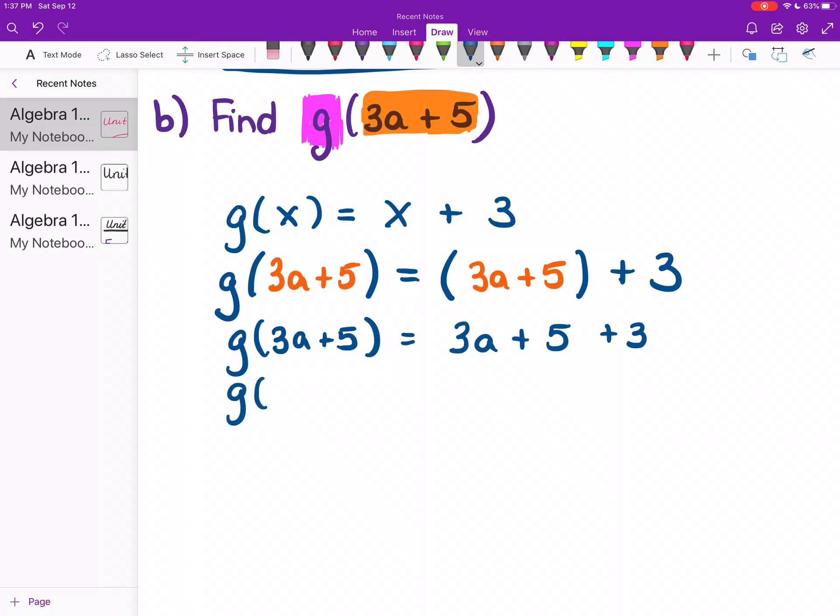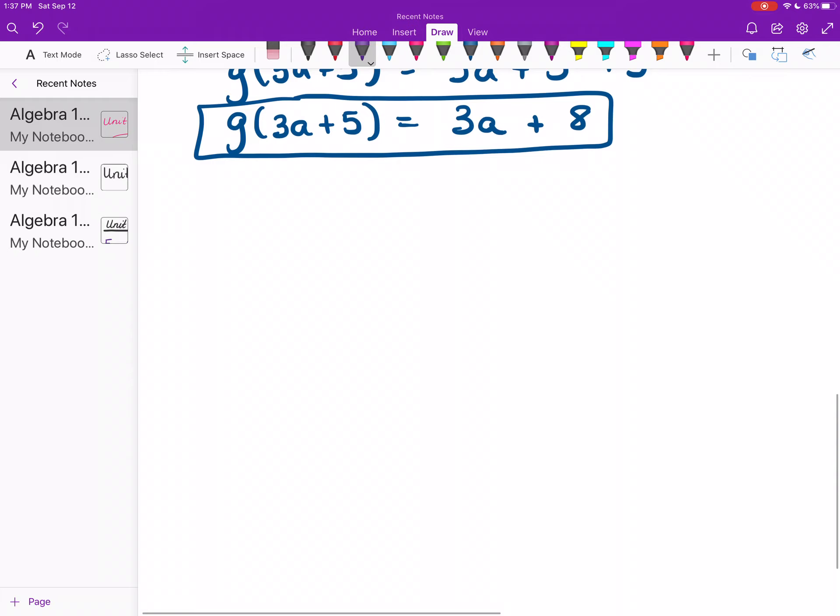And then I have that plus 3. And so I finish the problem off by combining like terms. The a doesn't have anything that it can be combined with on the right-hand side. And the 5 and 3 can go together to make an 8. That's my answer. Okay? C. Let's go to another problem.